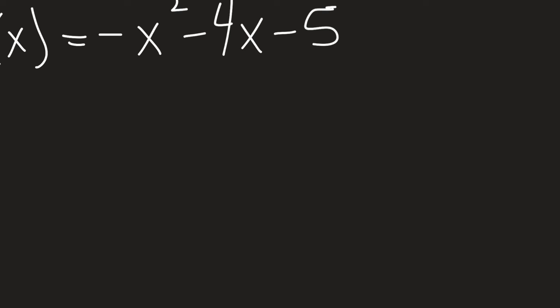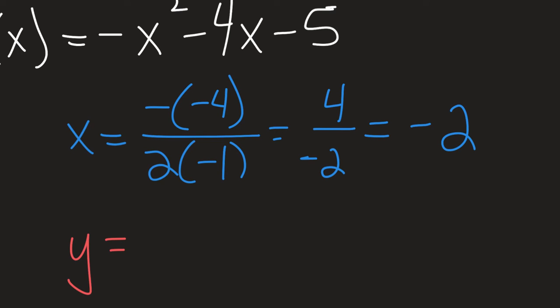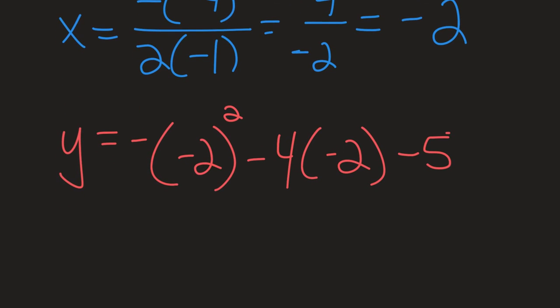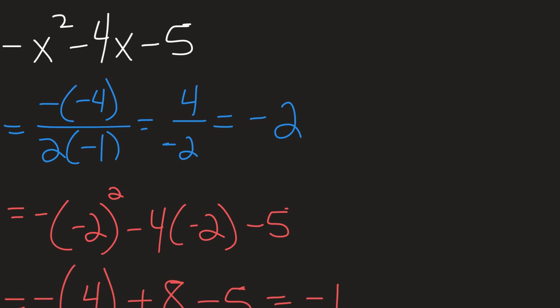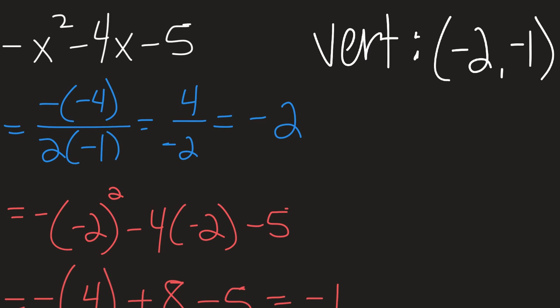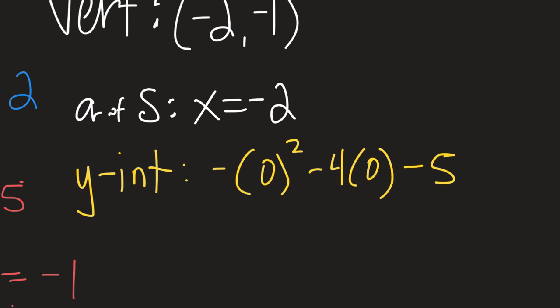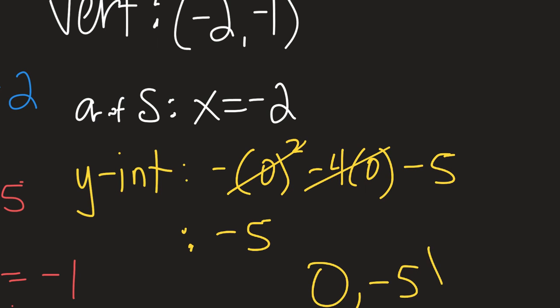Let's find all the attributes of another quadratic. We start with the X coordinate of the vertex using the formula, and then to find the Y coordinate, we plug in negative 2 for all the X's. Using order of operations, we get a Y value of negative 1. So the vertex is at (negative 2, negative 1). The axis of symmetry is X equals negative 2 — the equation of a line through the X coordinate of the vertex. The Y-intercept is found by plugging in 0 for X, which leaves us with negative 5, so the Y-intercept is at (0, negative 5).